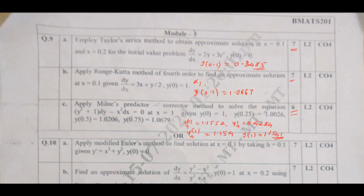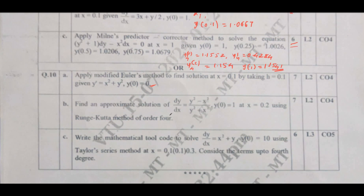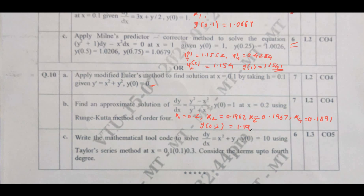I have solved the modified Euler method in my previous video — you can go through that. For question number 10b, using the RK method to solve the given differential equation: k₁ = 0.2, k₂ = 0.1967, k₃ = 0.1967, k₄ = 0.1891. Therefore y(0.2) = 1.196 is the required solution, carrying 7 marks. For question 10c, write the mathematical code to solve the differential equation using the Taylor series method — that carries 6 marks.